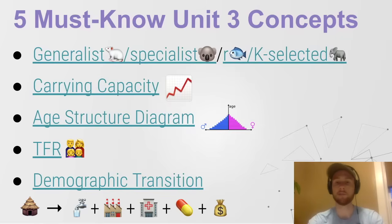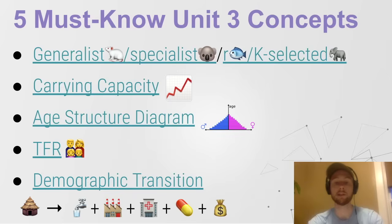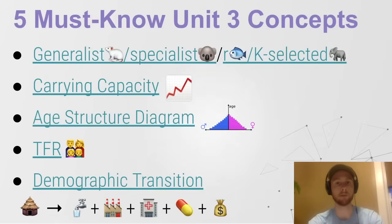We have carrying capacity — when a population exceeds its carrying capacity, the maximum number of individuals an ecosystem can support, it's going to crash. There could be a die-off — overshoot and die-off. Then we have the age structure diagram, which tells us the proportion of individuals in a population that are of each age cohort. An age diagram showing many individuals in the pre-reproductive cohort at the bottom would indicate a lot of future growth, leading to potential environmental problems like overconsumption, increased carbon footprint, or increased resource needs.